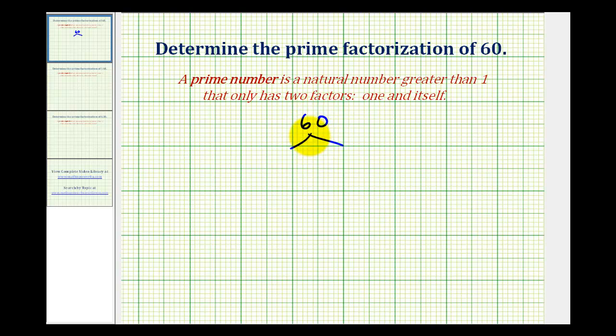To start this, we need two numbers that have a product of 60, for example, 6 times 10. But neither 6 or 10 are prime, so we'll keep breaking these down into factors until we have prime factors.